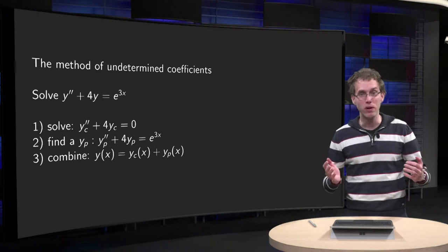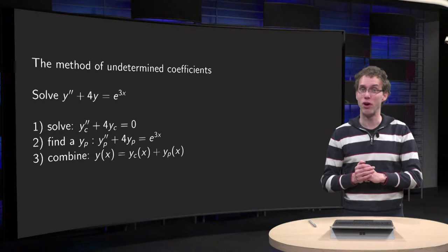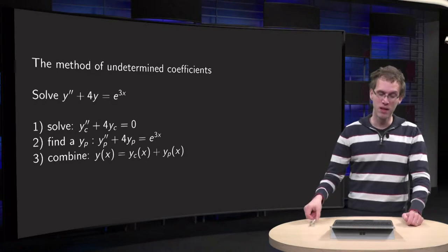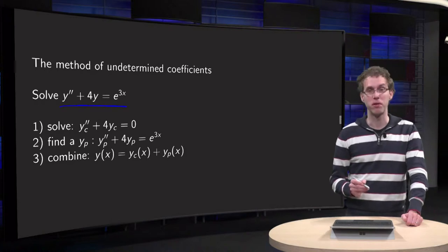How does that guessing work? That's what you will learn in this video, it's called the method of undetermined coefficients. I will use an example: y'' + 4y = e^(3x).